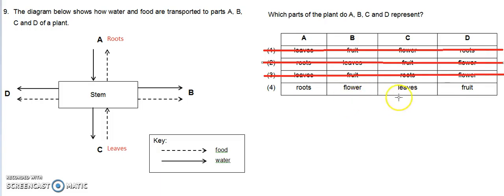B and D are flower and fruit, which are other parts of the plant receiving the water and the food. So the answer is option 4.